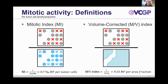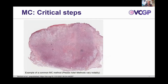There's another method called the volume-corrected mitotic index, used in human medicine especially for breast cancer and other tumors that include cystic spaces. You estimate the area of tumor within the 2.37 square millimeters and divide the number by the proportion that contains tumor cells, accounting for areas inaccessible for the mitotic count. We are going to talk about the mitotic count, as that is what is done routinely; the others are for future research.